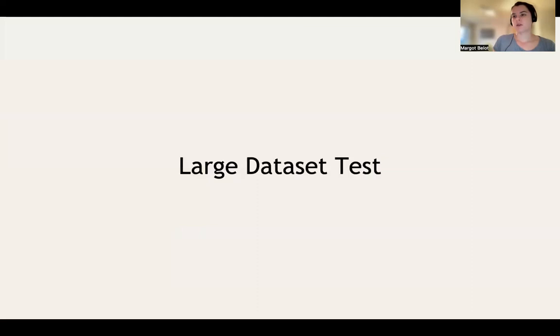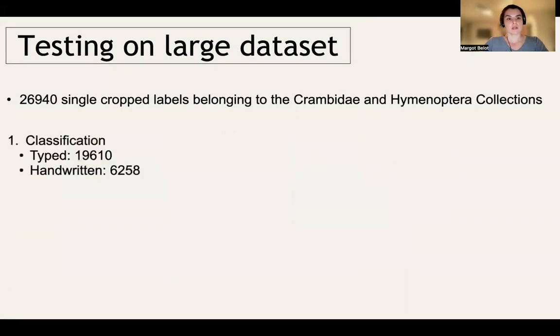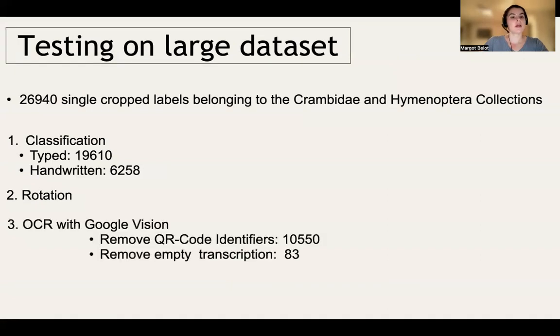We then conducted a large data set test. For that, we used over 26,000 single label images from two of our entomological collections. Since they are single label images, we applied our classifier. Then we applied the rotation tool on our classified typed single label images. Then we applied our OCR using Google Vision. From the OCR output transcriptions, we removed all the QR code identifier transcriptions since they are extremely standardized. We also removed all the empty transcriptions. This whole process took a little under two hours and cost us 19 euros for the Google Vision API.